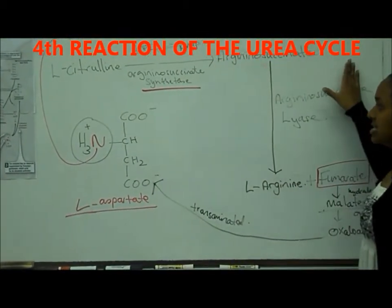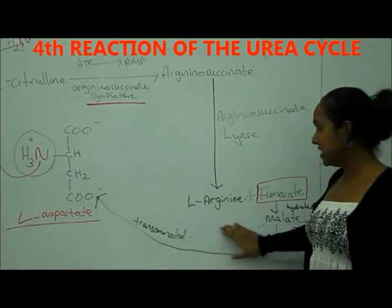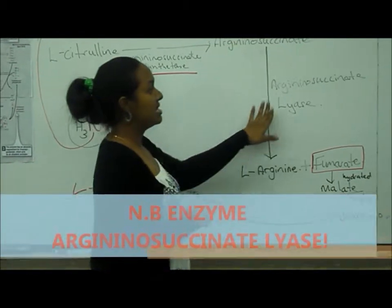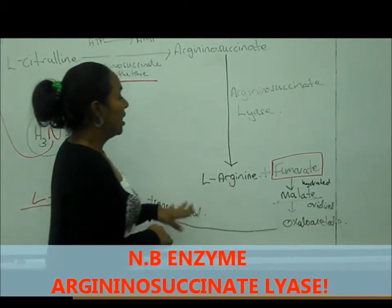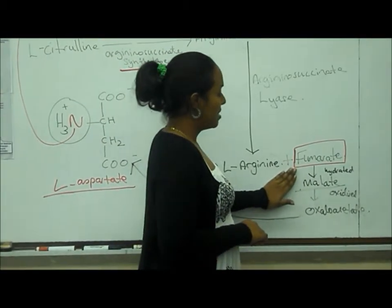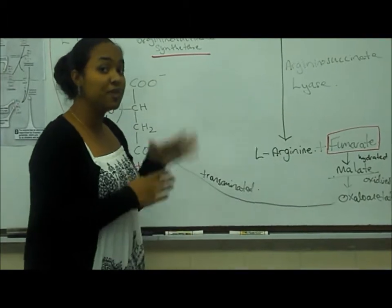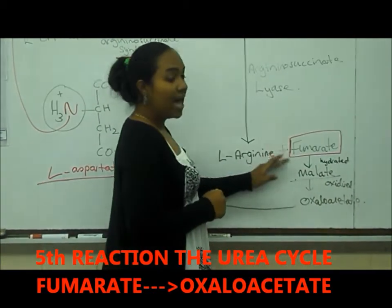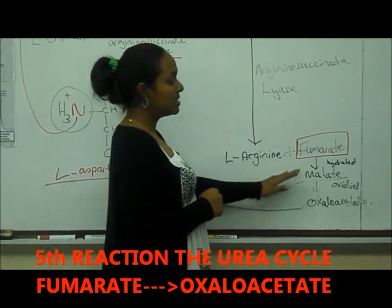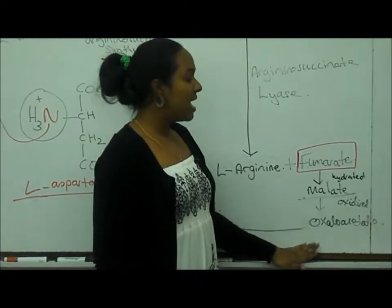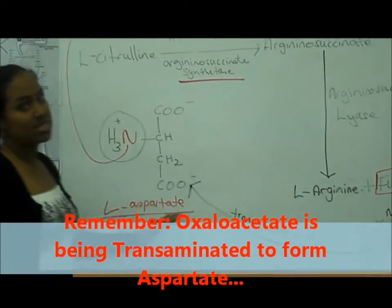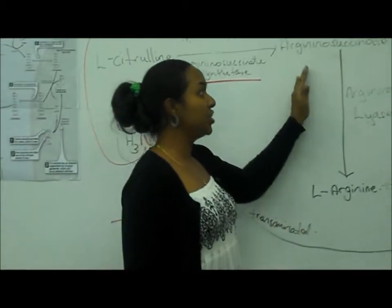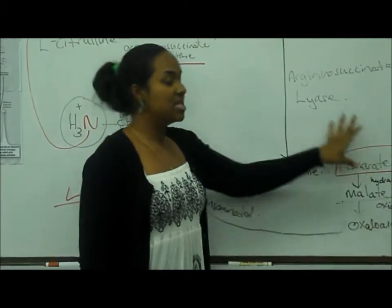Argininosuccinate then enters the next reaction to produce L-arginine and fumarate. The enzyme that catalyzes this reaction is argininosuccinate lyase. Fumarate that is produced is very important: it is hydrated to malate, and then malate is oxidized to oxaloacetate. Oxaloacetate is transaminated to form L-aspartate. We saw earlier that L-aspartate combines with L-citrulline to produce argininosuccinate — so the fumarate formed is recycled back into the cycle.